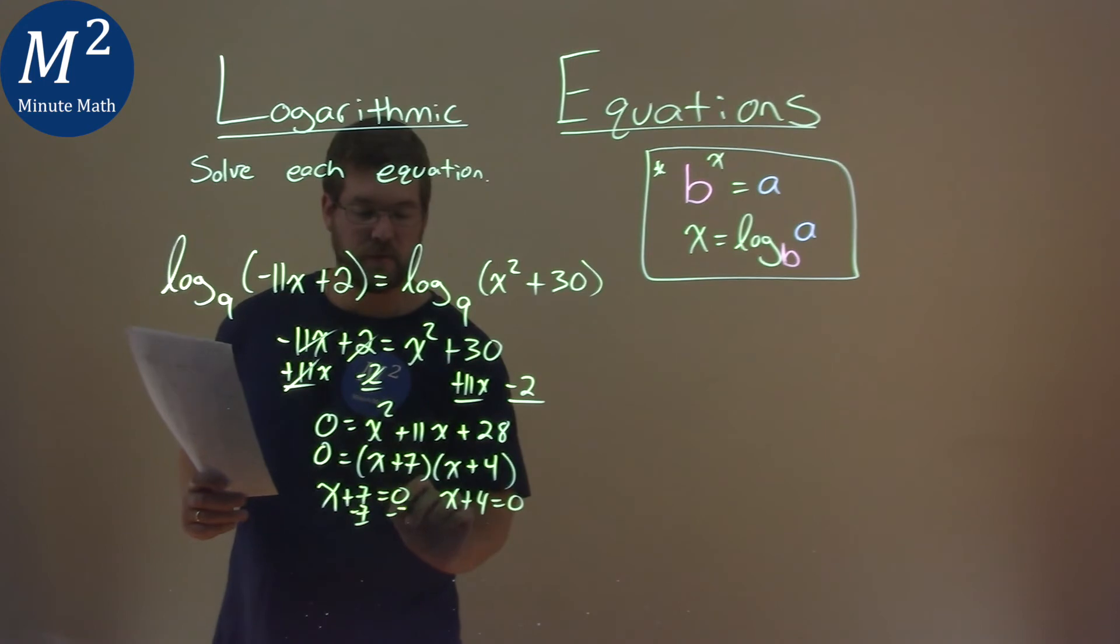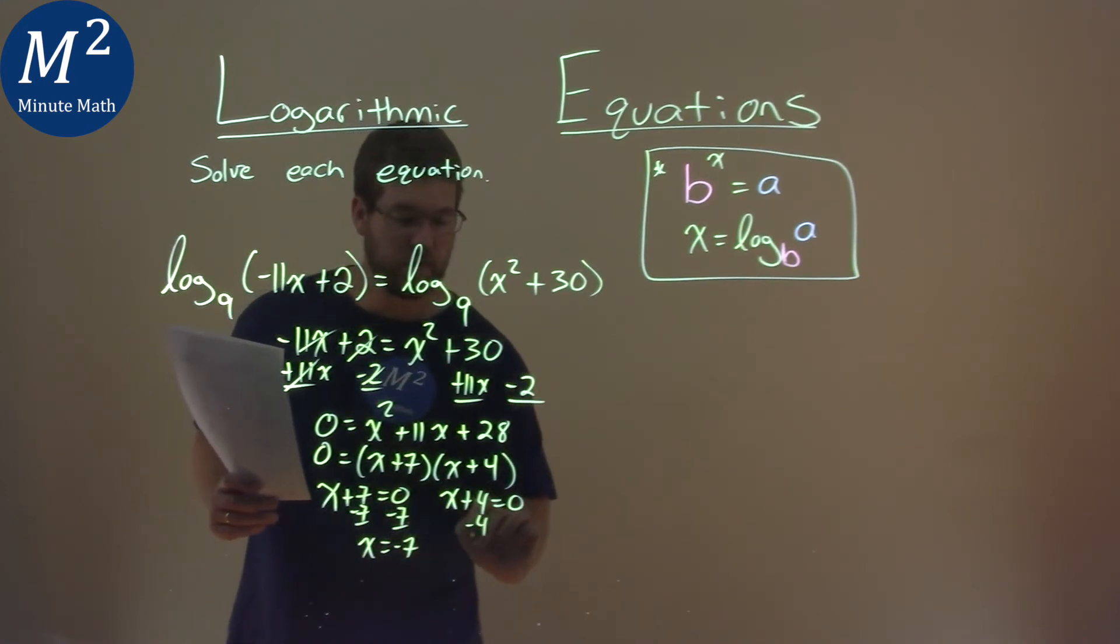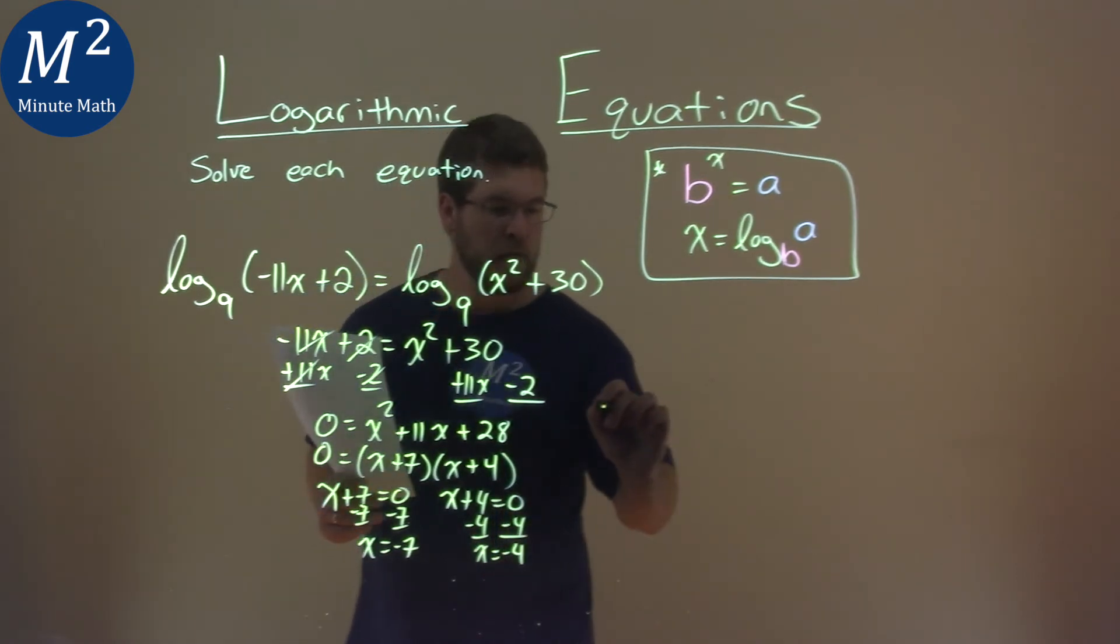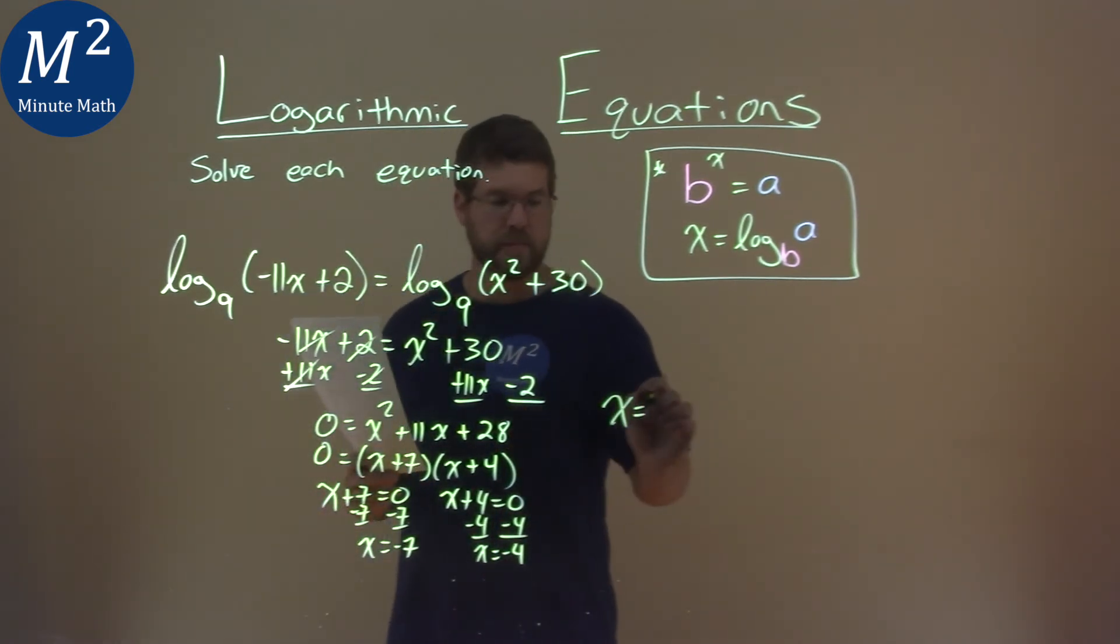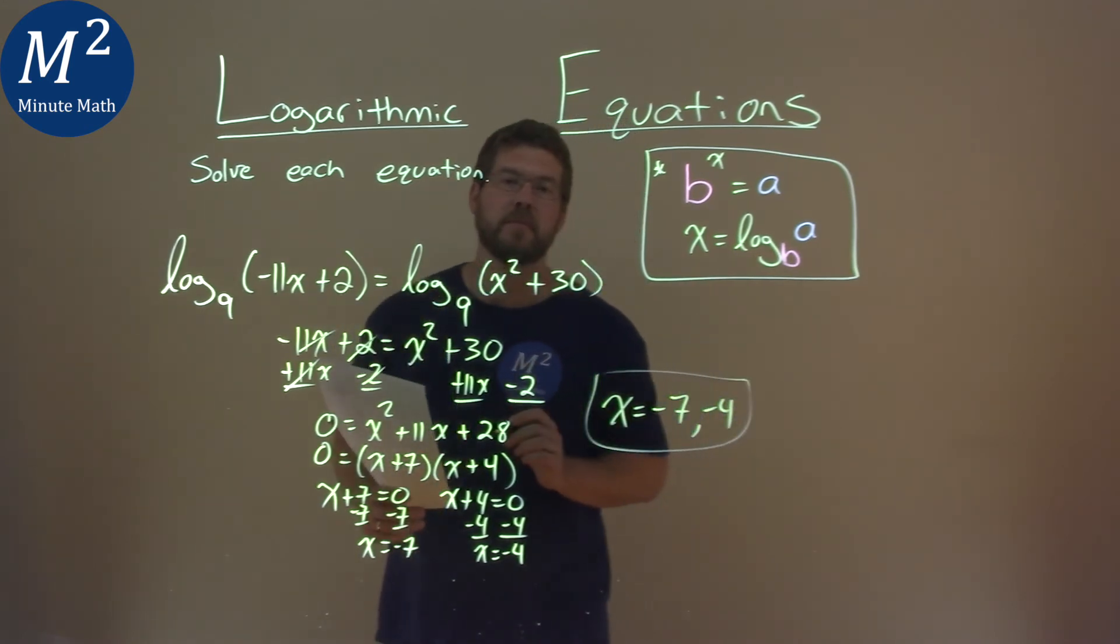We solve, subtract 7 from both sides, and x equals negative 7, and do the same thing with the 4. And x equals negative 4. And so my two solutions here are negative 7 and negative 4, and that is my final answer.